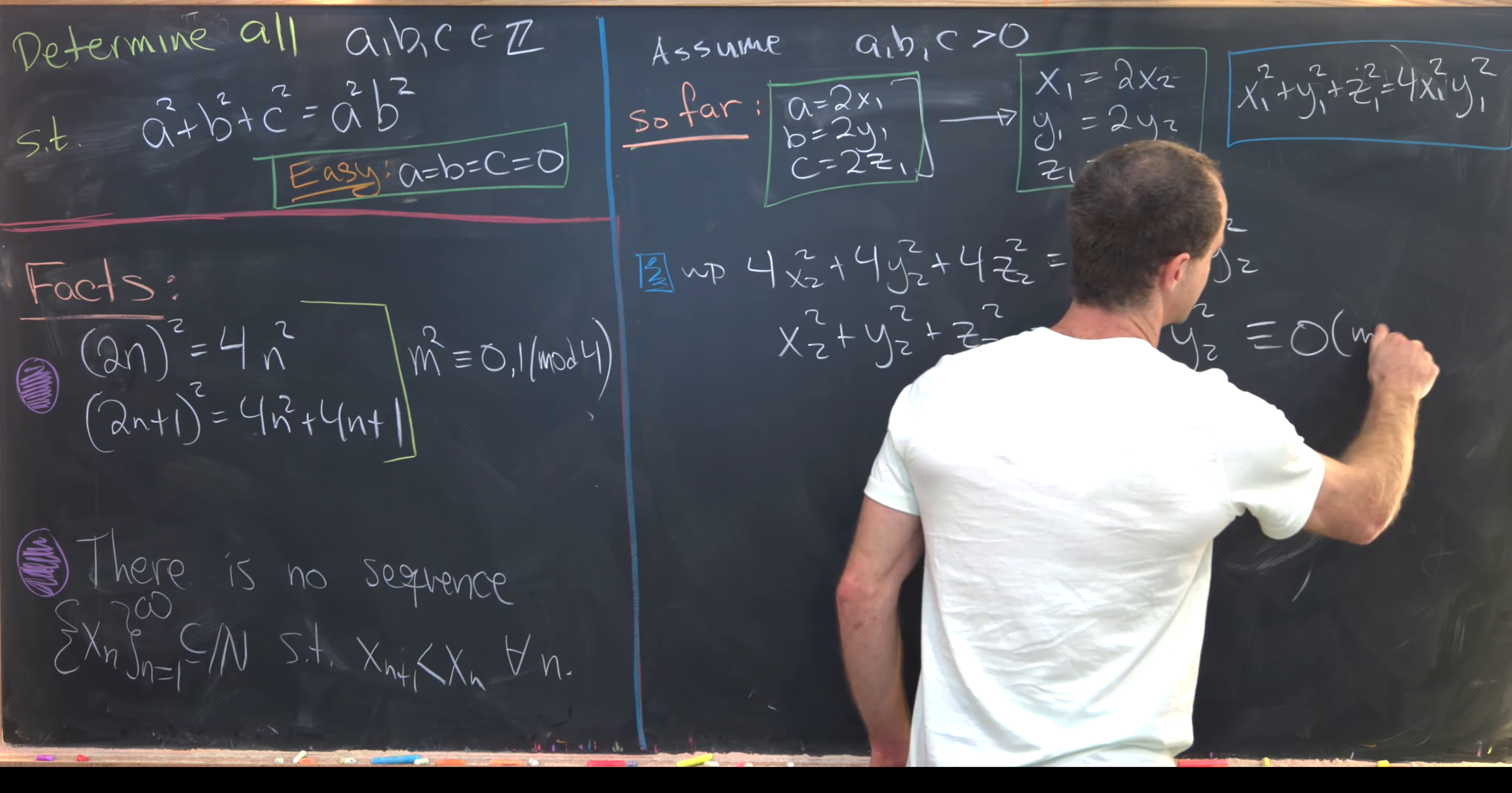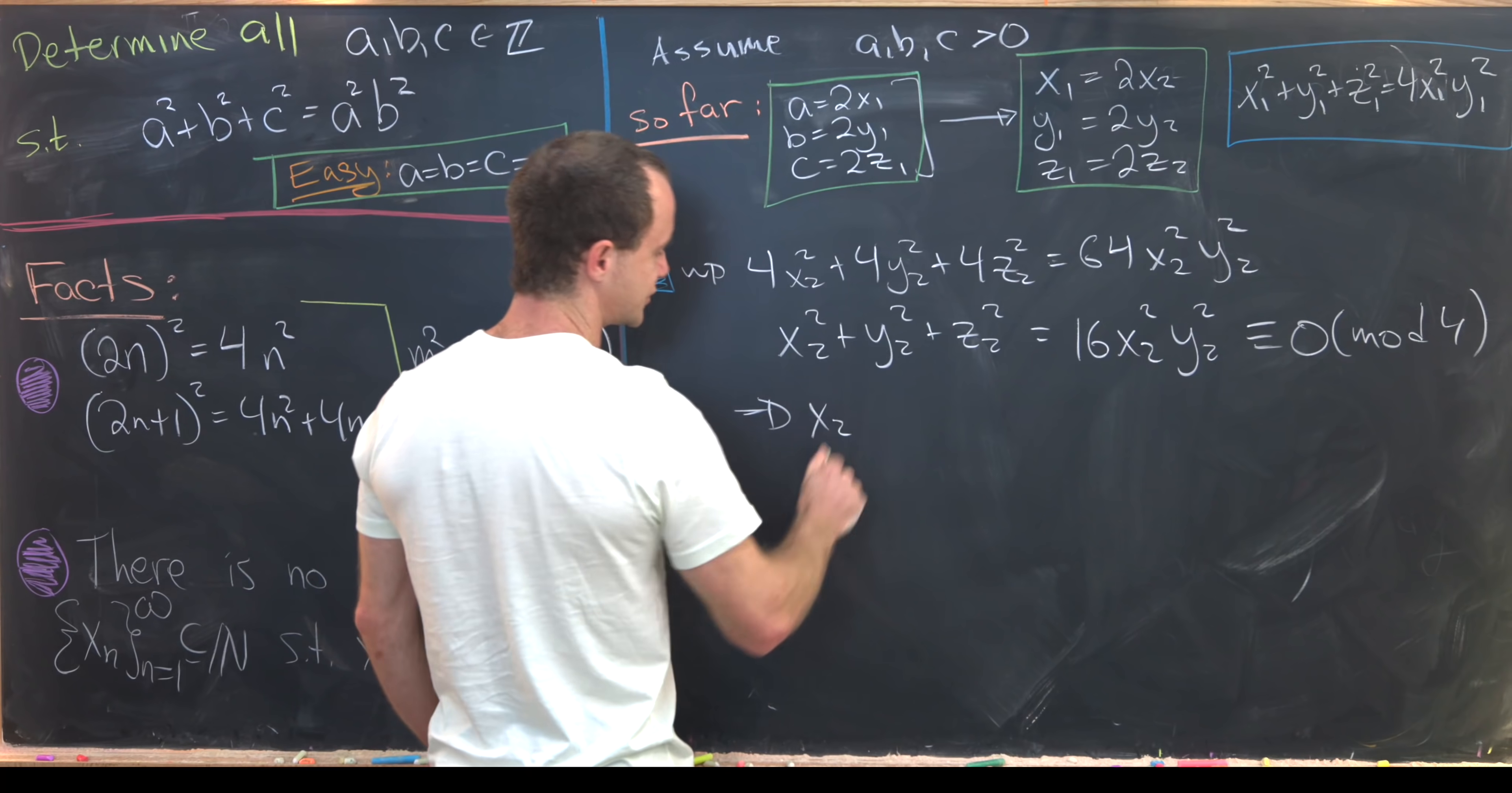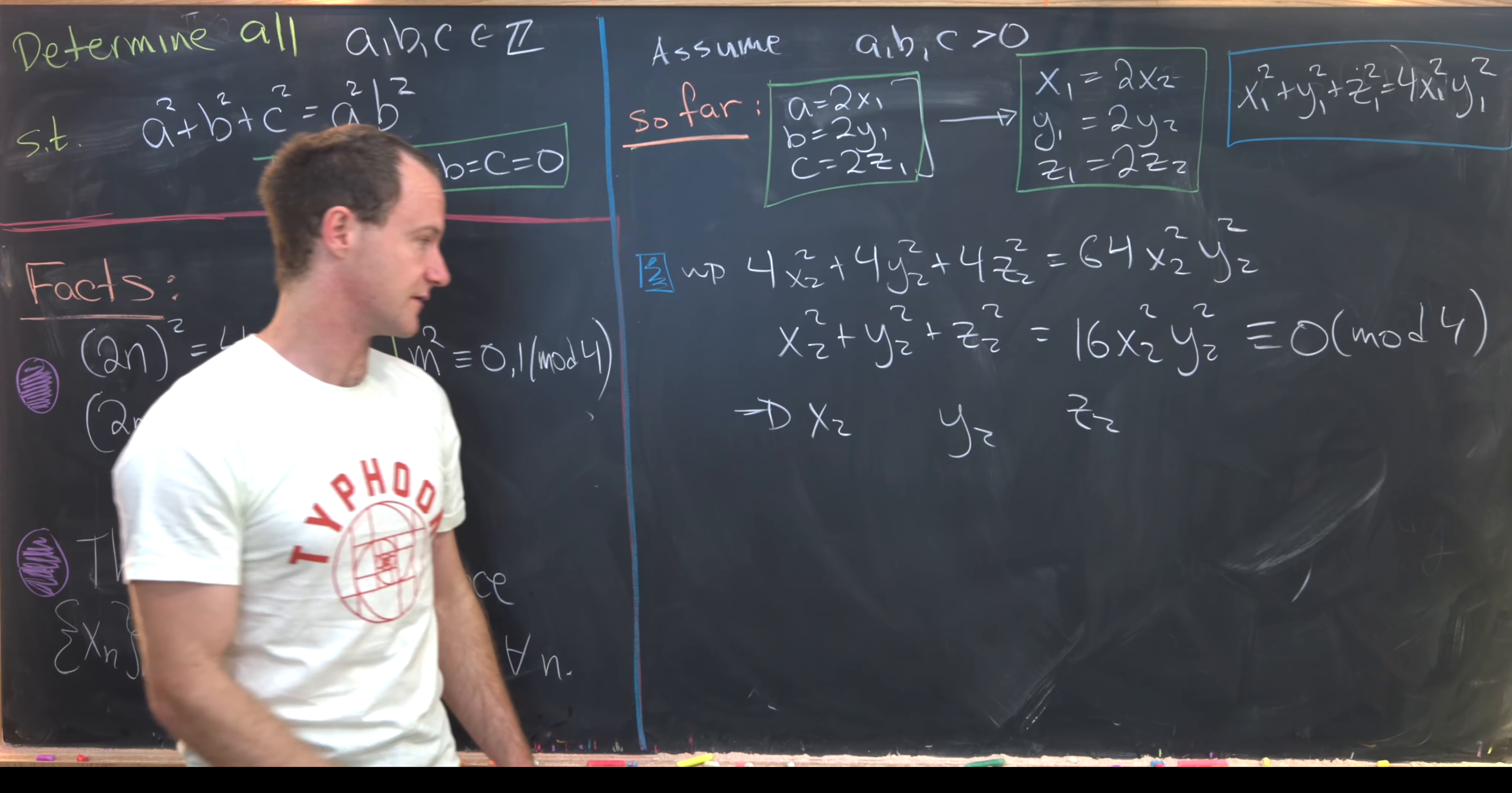Again, that's congruent to 0 mod 4. But since that's congruent to 0 mod 4, x₂, y₂, and z₂ are all even. That's, again, the only way to become 0 mod 4.